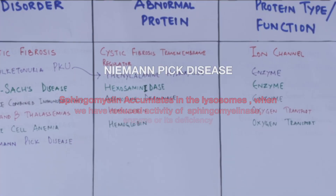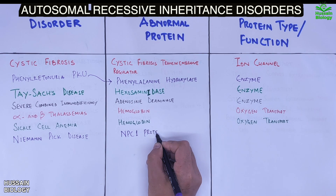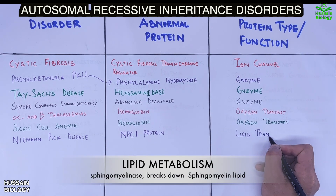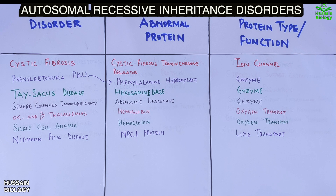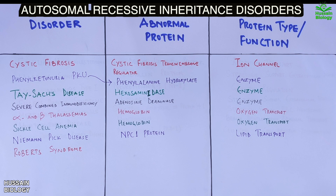Then we have Niemann-Pick disease, where sphingomyelin accumulates in lysosomes due to abnormal NPC1 protein. Under normal conditions, this protein aids in lipid transport.